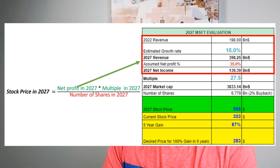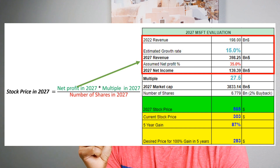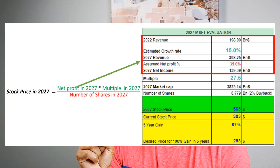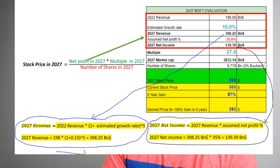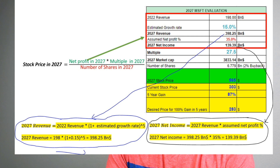Now that I have the 15% revenue growth rate, I move on to 2027 revenue. The formula is: 2027 revenue equals 2022 revenue times (1 plus estimated growth rate) to the power of 5. Since 2027 is 5 years away from 2022, I raise it to the power of 5. So 198 billion times (1.15)^5 gives me $398 billion of revenue in 2027. This is an estimate — it could be higher or lower, but $398 billion seems like a rough estimate I can believe in.